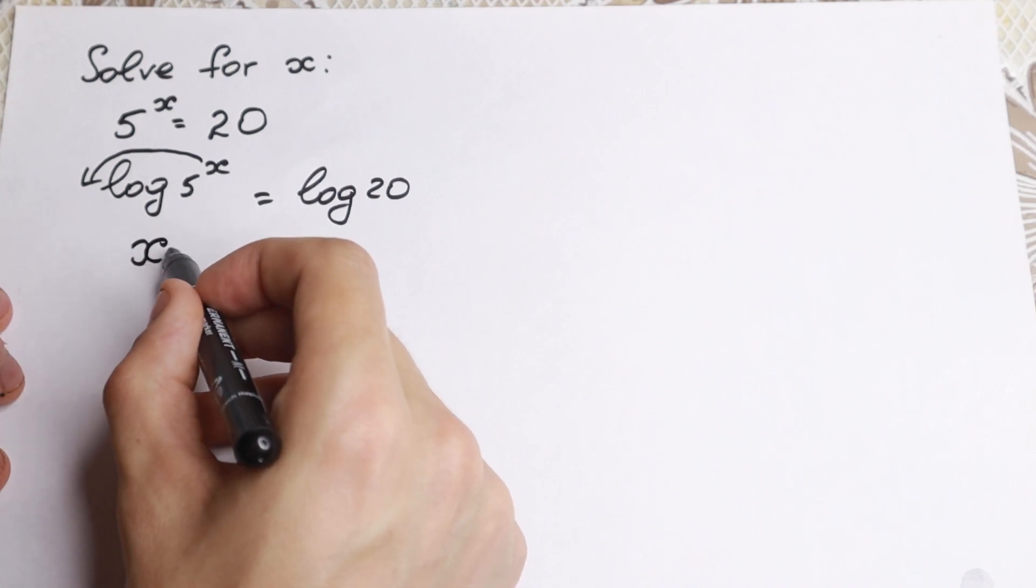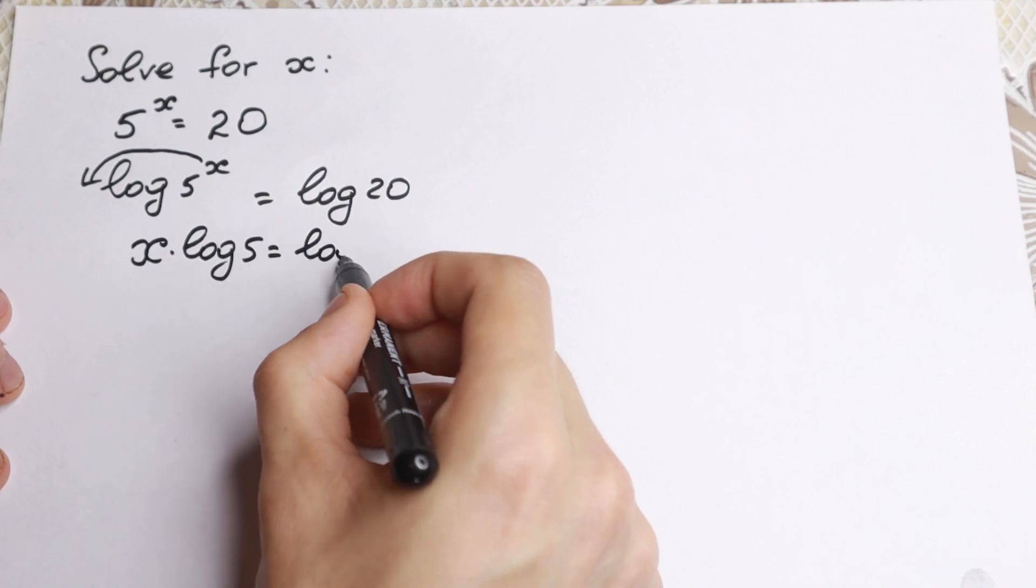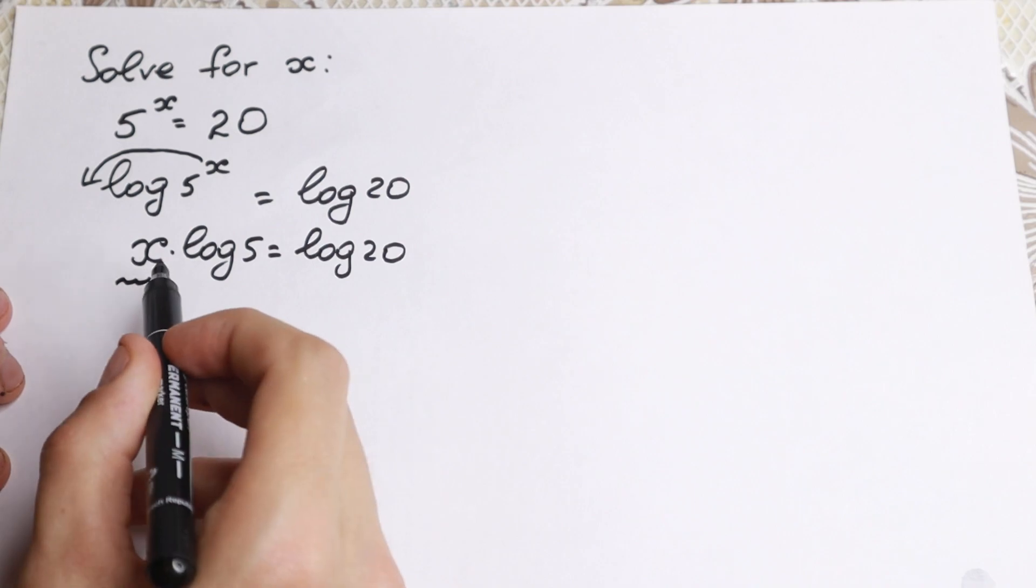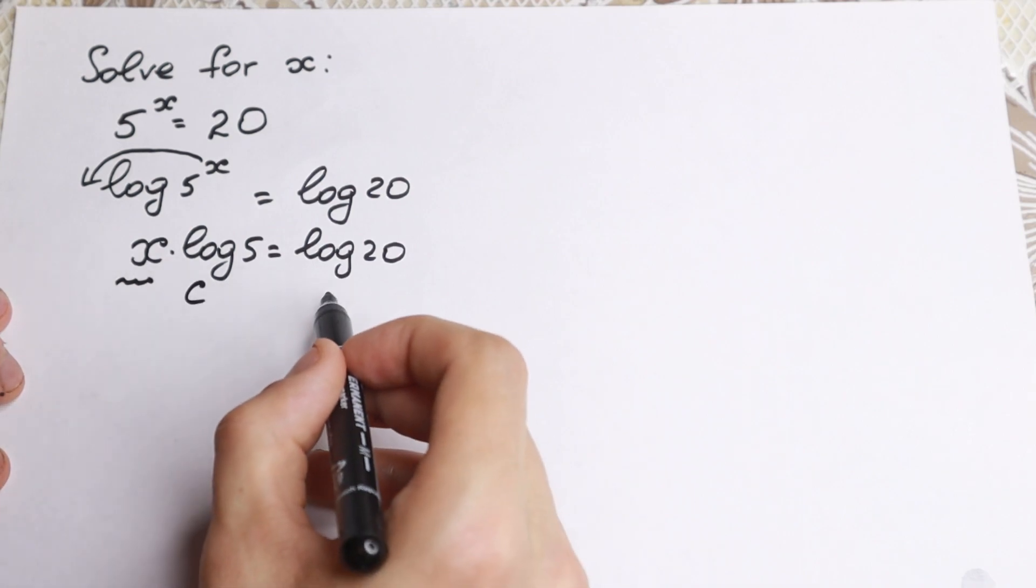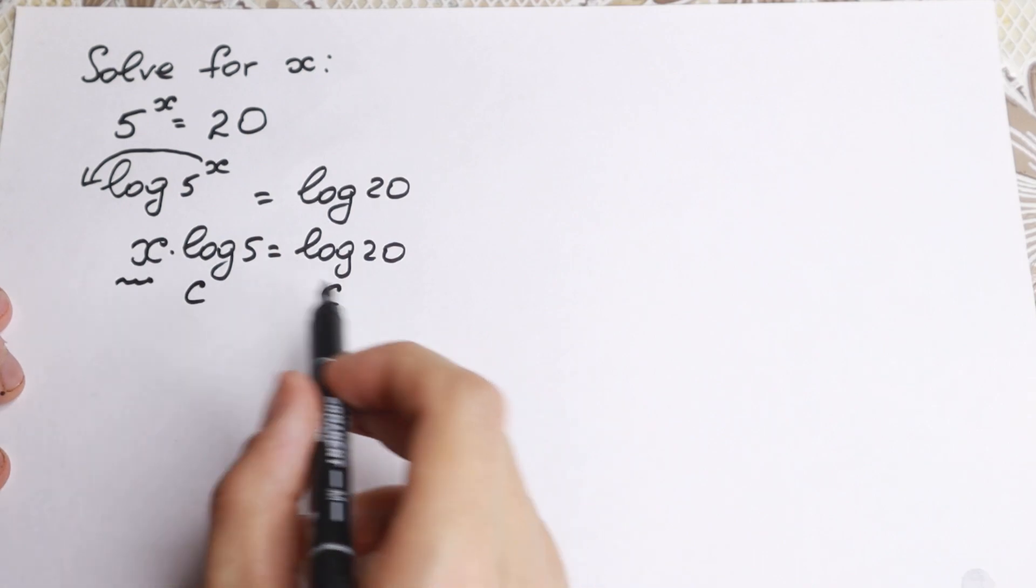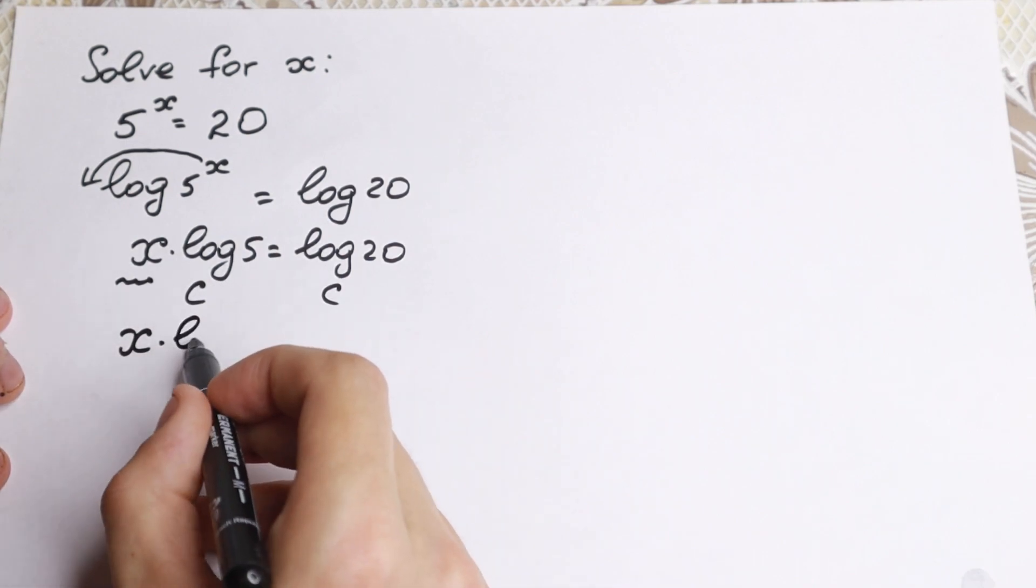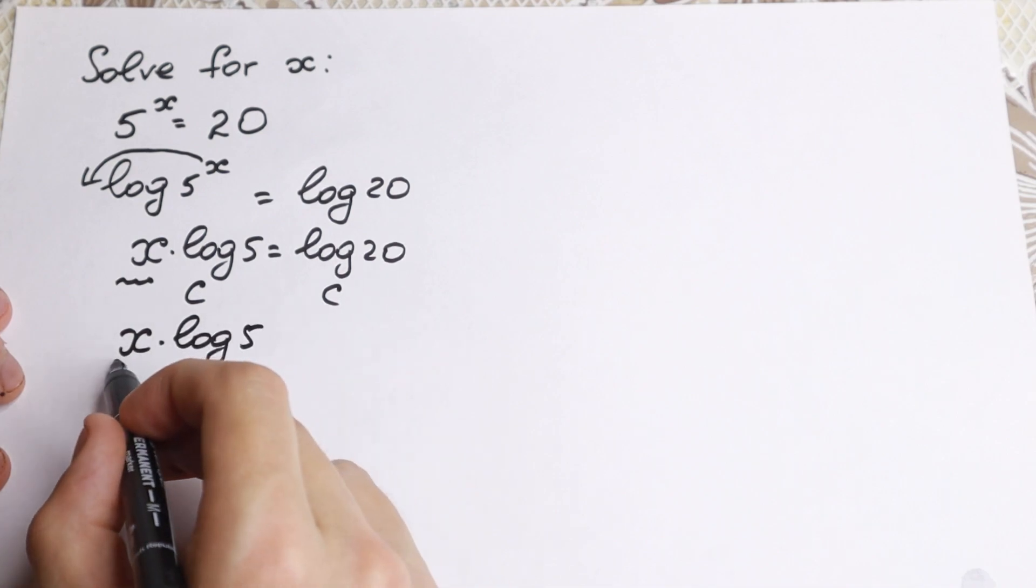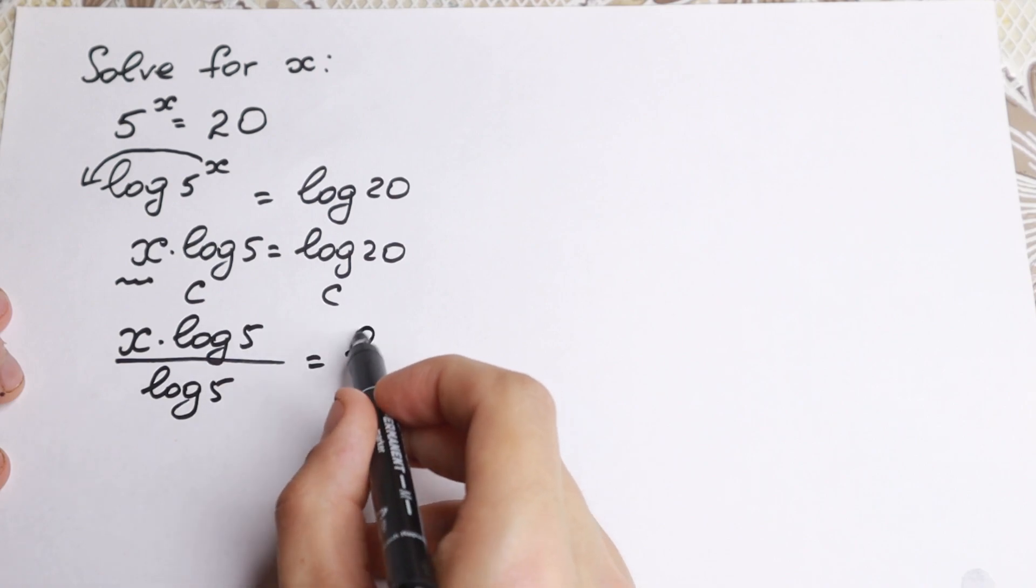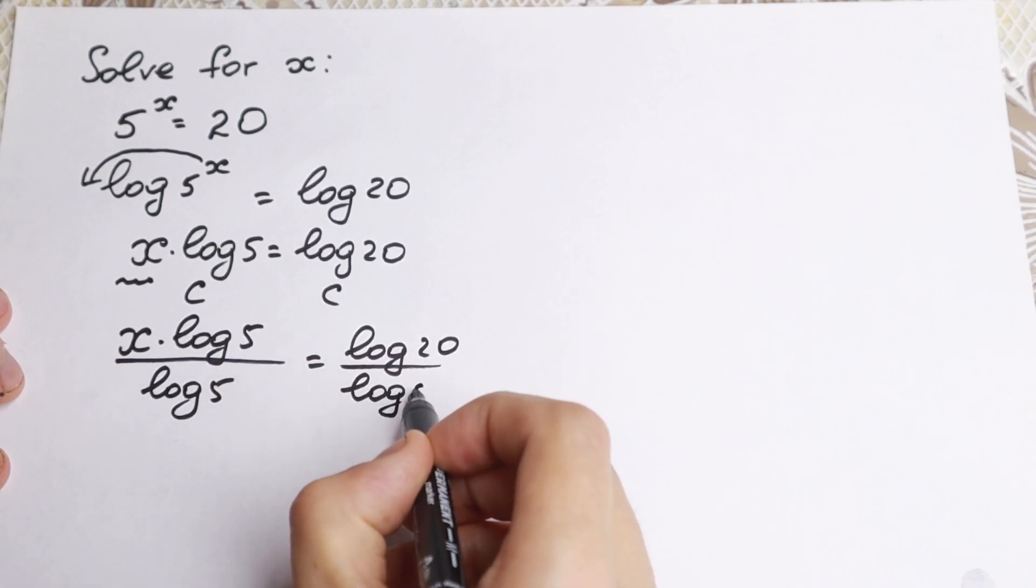So we have x times log 5 equal to log 20. And if we look closely to this product on the left, we have the variable that we need to find, and we have a constant right here, and we have a constant right here. So we can easily divide both sides by logarithm 5. We have x times log 5 over log 5, and on the right hand side log 20 over log 5.